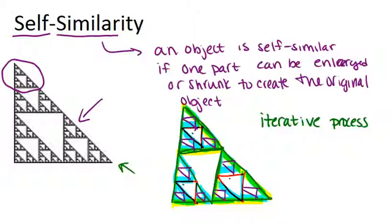So that's the idea of self-similarity. It's when you could zoom in on one part of the object and it looks exactly like the original object itself. It has a lot to do with fractals and you can create them by repeating the same process over and over again like we did right here and that's called an iterative process.